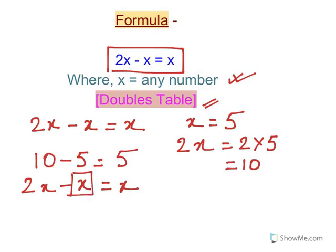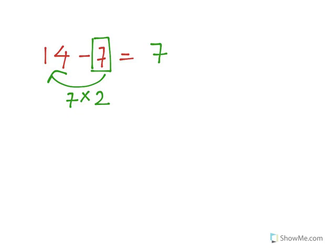Let's take another example. So 14 minus 7, what will be the answer? It will be 7. Why? Because 7 got doubled and that is 14. So 14 minus 7 will be 7 because 7 is getting subtracted from the double of 7.